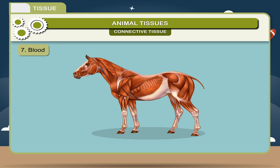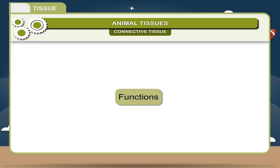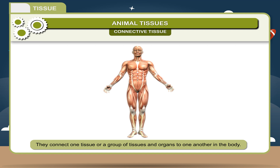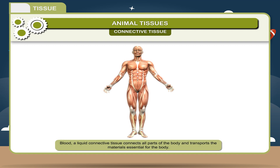7. Blood — It is a liquid connective tissue which is present in the entire body. It is a vital fluid found in humans and other animals that provides important nourishment to all body organs and tissues. Functions: 1. They connect one tissue or a group of tissues and organs to one another in the body. 2. They provide support to the body and body organs. 3. Blood, a liquid connective tissue, connects all parts of the body and transports materials essential for the body.